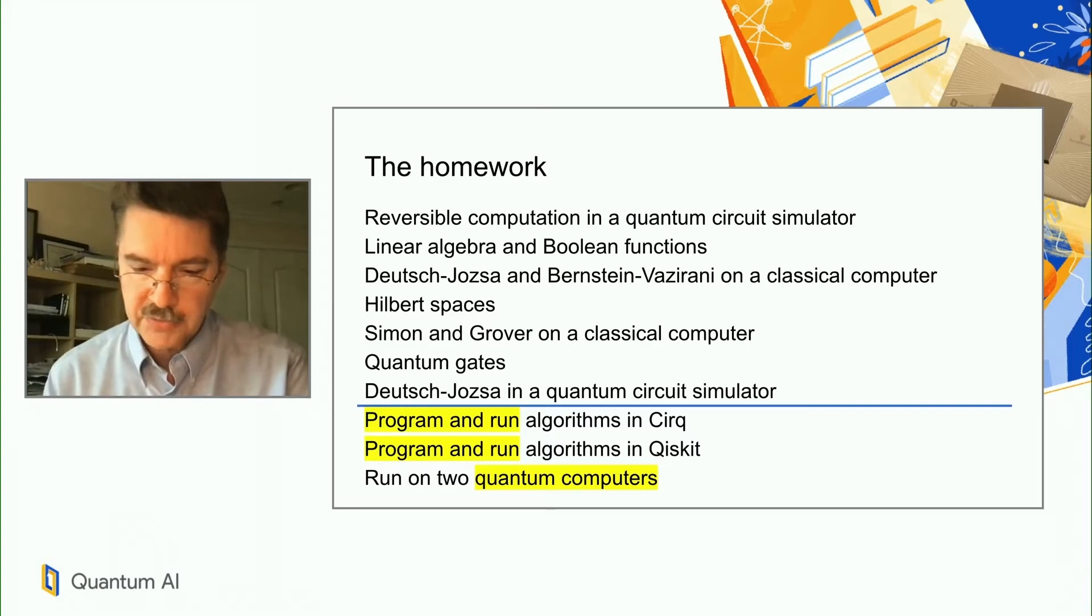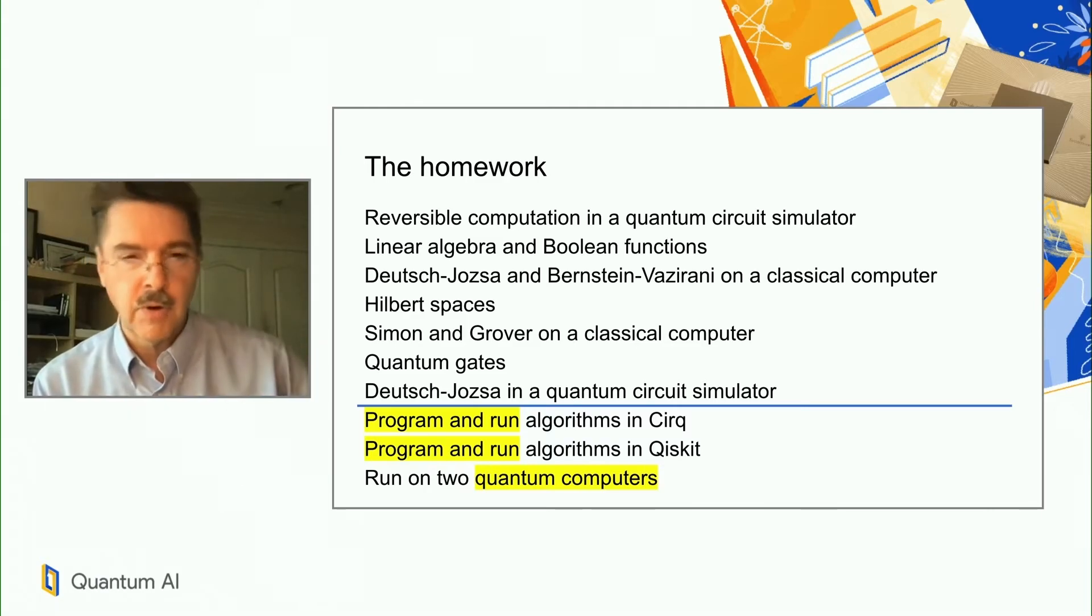We were running on a Google quantum computer, so thanks to Alan Ho who was our mentor at Google and to Eric Osby who made everything happen. What we did was that we wrote our own server which allowed students to send jobs. The jobs would be sent to the quantum computers, results would come back, and it would happen in a way so the students had some control over what was going on, so they could pick their own qubits and stuff like that.